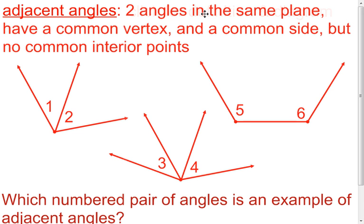The first one we want to look at is what's referred to as adjacent angles. I like to think of adjacent meaning next to, so one way to think of adjacent angles is angles that are next to each other. That's the simple definition. The mathematical definition gets a little more in-depth, because just because two angles are next to each other doesn't necessarily mean they're going to be adjacent.